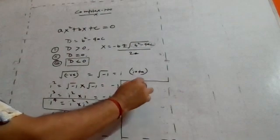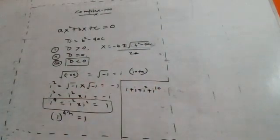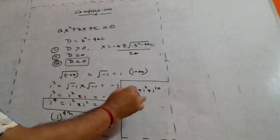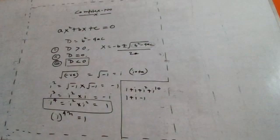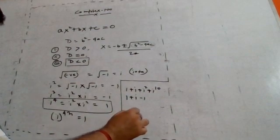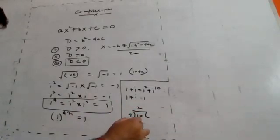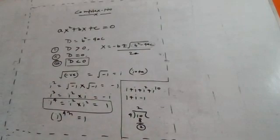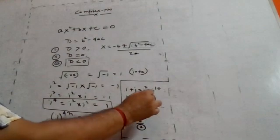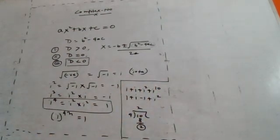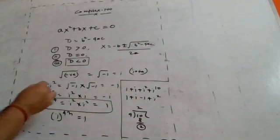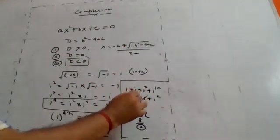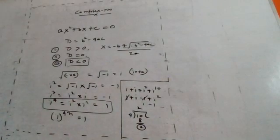Example: find the value of 1 + i + i² + i^10. i² = -1, so 1 + i + (-1) = i. For i^10, divide the exponent 10 by 4: 4 goes into 10 twice with remainder 2. So i^10 = i². i² = -1, so i + (-1) gives a final answer of i - 1.